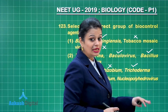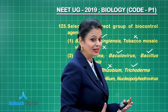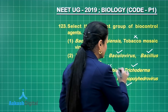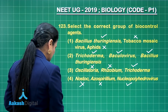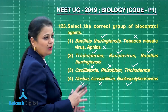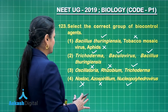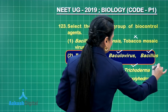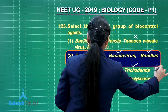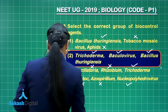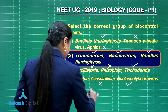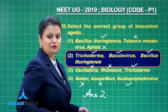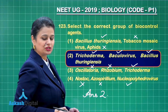Nucleopolyhedrovirus — yes, these are also biocontrol agents. So the option which contains all biocontrol agents is option number two. This is our right answer. Moving on to the next question.